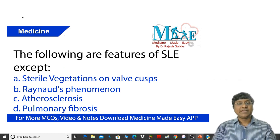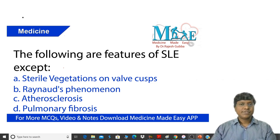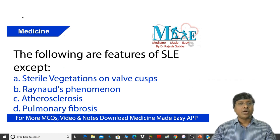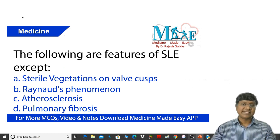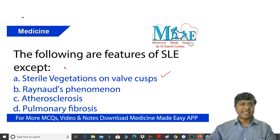Taking the first option — sterile vegetations on the valve cusps — this is nothing but endocarditis. In systemic lupus erythematosus, you will have what is called pancarditis. The endocardium is also affected, which is called Libman-Sacks endocarditis. Sterile vegetations will be present on the inferior surface of the valve in Libman-Sacks endocarditis, so the presence of sterile vegetations on the valve cusps is a correct feature of SLE.